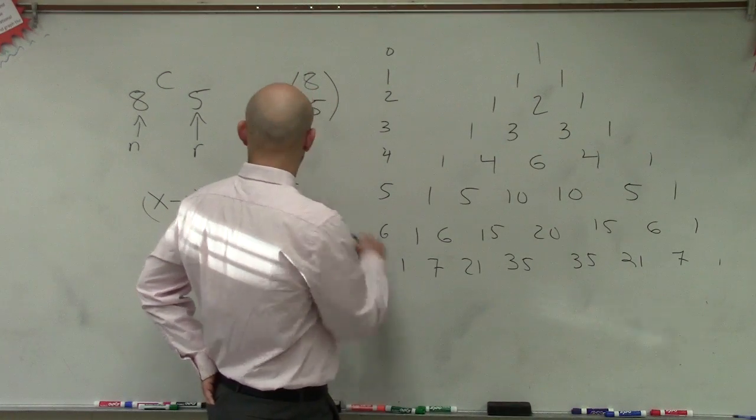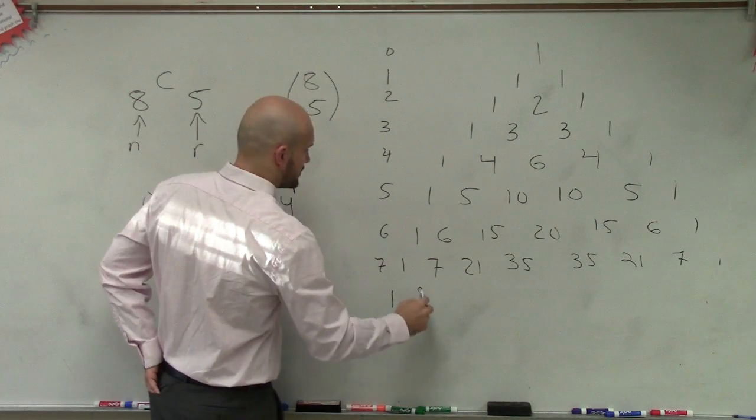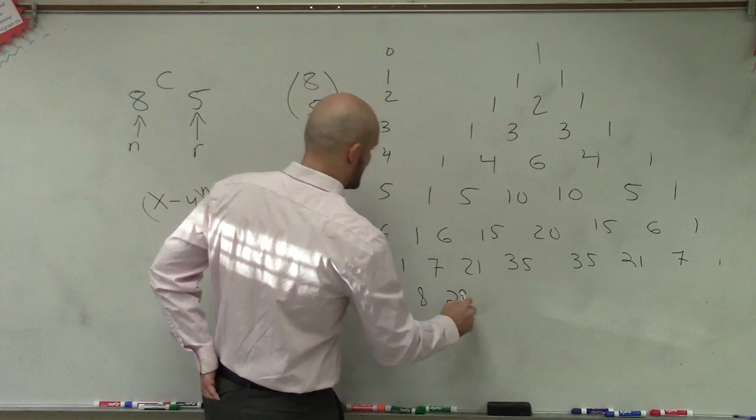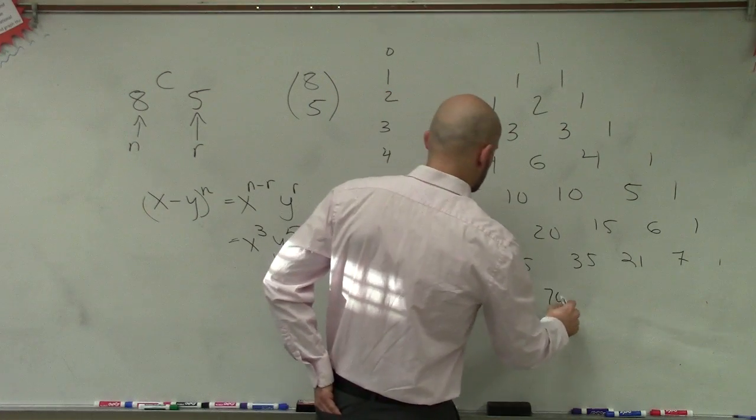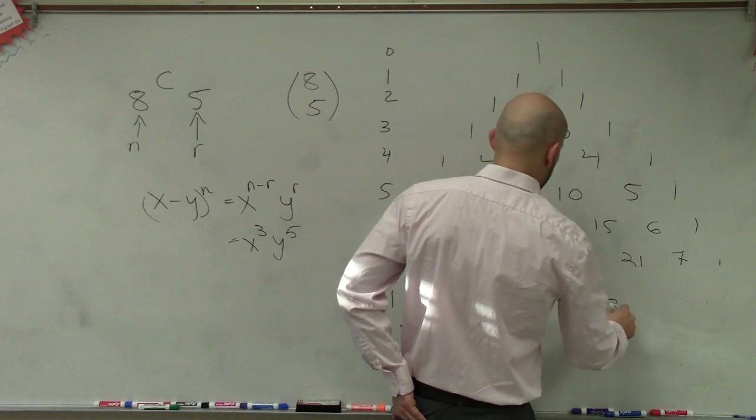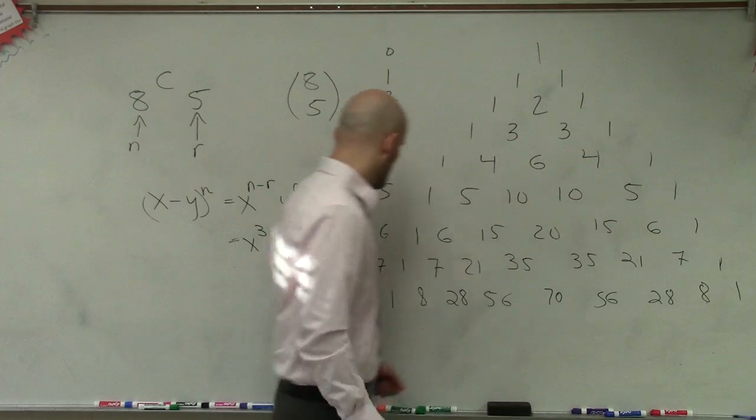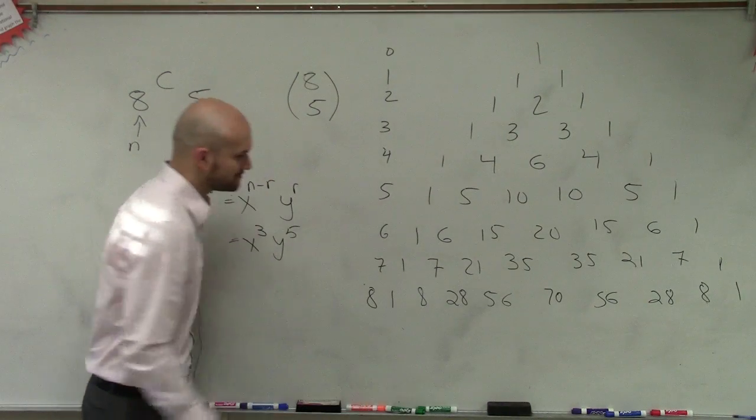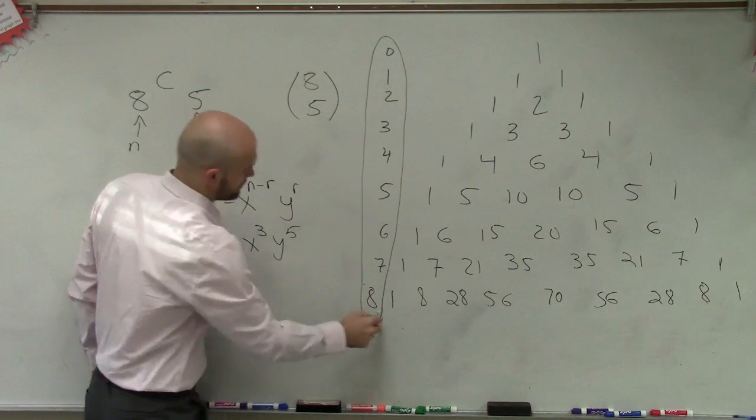And now, so the one we're looking for with the 8th expansion is going to be 1, 8, 28, 56, 70, 56, 28, 8, and 1. Alright? So that means we're going to have, okay.